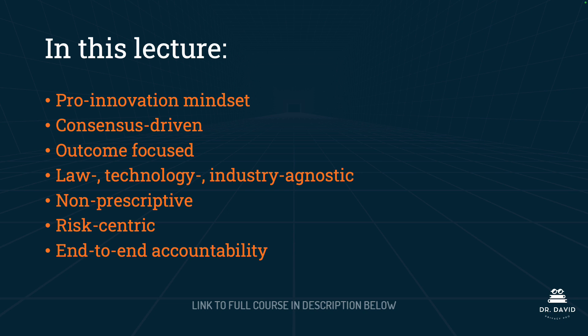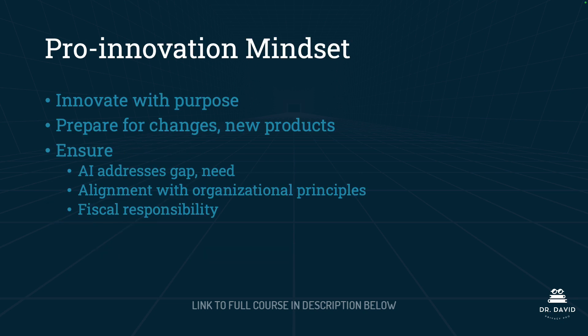You should remember all of these principles and the following definitions and explanations of them. Having a pro-innovation mindset means that your organization is innovating with purpose. You are preparing for changes and new products to address those changes. It also ensures that AI in your organization addresses a specific gap or need, is aligned with organizational principles, and that your organization is fiscally responsible.